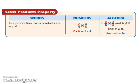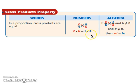Let's look at the cross products property. In a proportion, cross products are equal. To use this, you have to have an equal sign in between — if it's got multiplication only, you're not doing the cross products property. When you do the cross products, you make a cross: 2 times 6 equals 3 times 4, or 3 times 4 equals 2 times 6. Algebraically, a times d equals b times c. Keep in mind, you can't have zero as a denominator, so b can't be zero and d can't be zero.